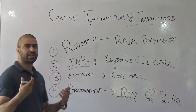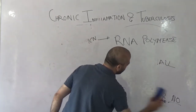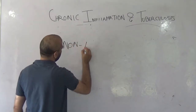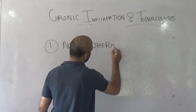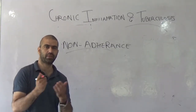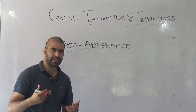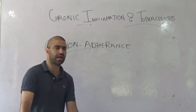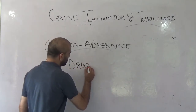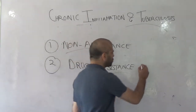Even though drugs are available, people are still dying. The number one reason is non-adherence. A person showing symptoms of tuberculosis has to take the four drugs — rifampicin, isoniazid, pyrazinamide, and ethambutol — for six months. But when a patient starts feeling better and stops taking the drugs early, this leads to something very dramatic called drug resistance, commonly referred to as MDR-TB.